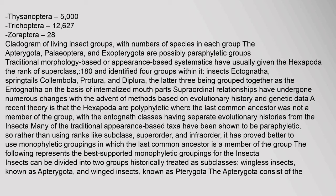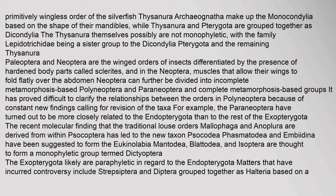Insects can be divided into two groups historically treated as subclasses: wingless insects (Apterygota) and winged insects (Pterygota). The Apterygota consist of the primitively wingless order of the silverfish. Thysanura and Pterygota are grouped together as Dicondylia. Paleoptera and Neoptera are the winged orders of insects, differentiated by the presence of hardened body parts called sclerites and, in the Neoptera, muscles that allow their wings to fold flatly over the abdomen.